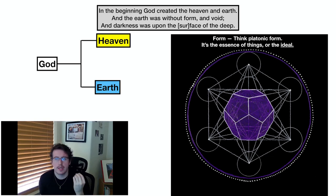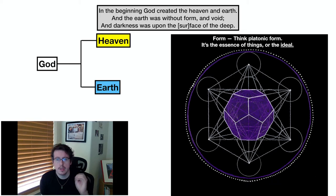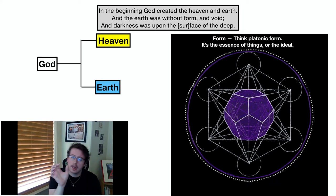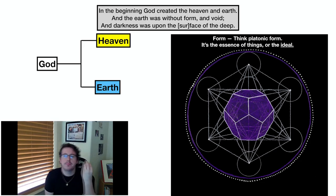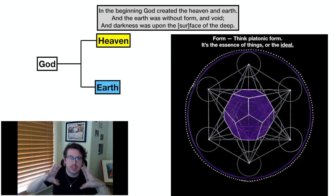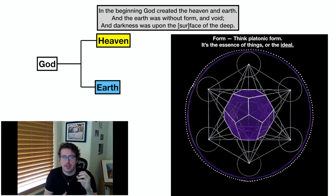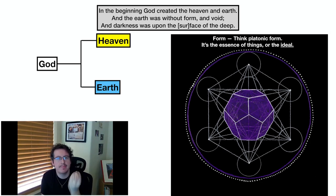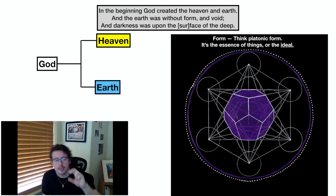It starts with: "In the beginning, God created the heaven and the earth. And the earth was without form and void. And darkness was upon the surface of the deep." I want to talk about the words "form" and "void." Form — think of Platonic form. It's the essence of a thing, the ideal of the thing. So in the beginning, there was no meaning to things, no ideal form of things. And void means it was empty. So there were no things, and there was no ideal of things. And then God created the heaven above and the earth below.